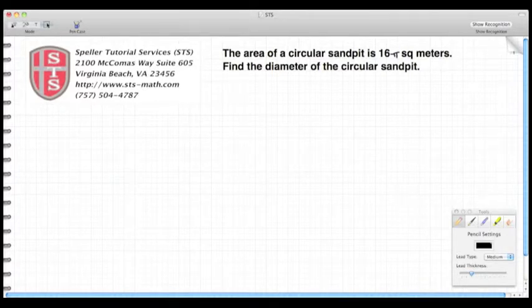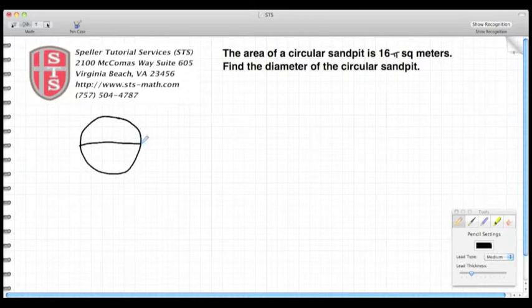Find the diameter of the circular pit. As always, we begin with a simple sketch. Since we're talking about a circular sandpit on the playground, we're going to start with a sketch of a circle. Here they want to know the diameter of this sandpit, so I draw a line going through the center of the circle touching two endpoints. It also states that the area inside the circle is